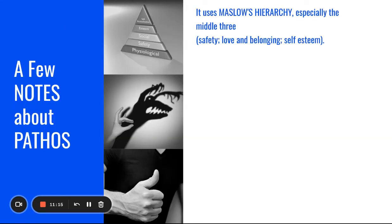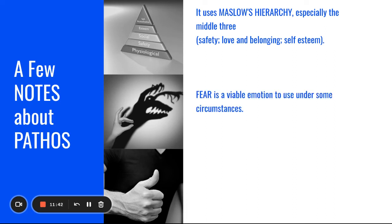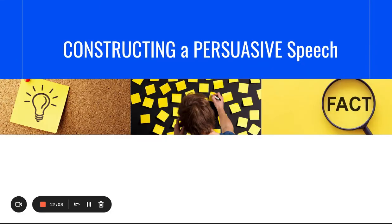A few notes about pathos: it uses Maslow's hierarchy of needs, especially the middle three — safety, love and belonging, and self-esteem. We need to know where our audience is in order to understand their needs. Fear is a viable emotion to use under some circumstances — statistics, data, stories, and examples can invoke fear and bring about pathos. However, positive emotion is generally better to use; bringing out a positive emotion in the audience can be very effective.